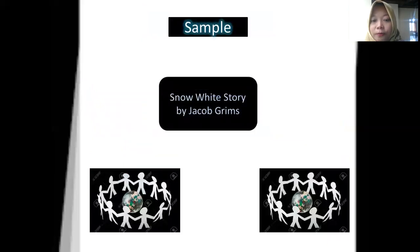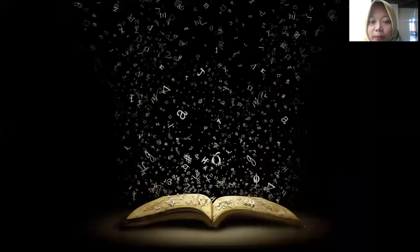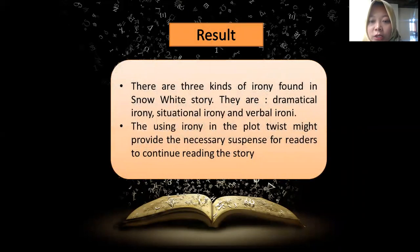The result of the study shows that the first kind of irony found in the Snow White story is dramatic irony, when the queen didn't know that the huntsman was lying about the death of Snow White. He said that Snow White is dead and brought the lungs and Snow White's heart, but actually the fact is Snow White is still alive.